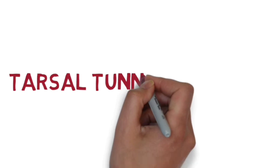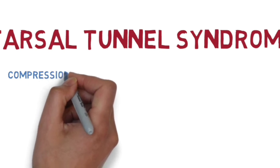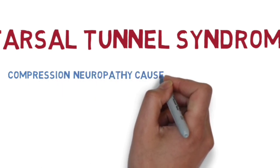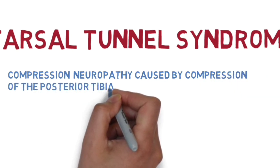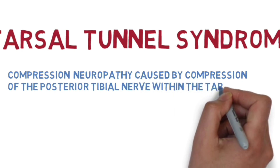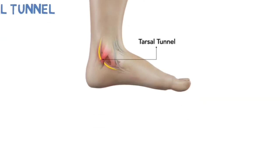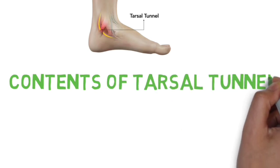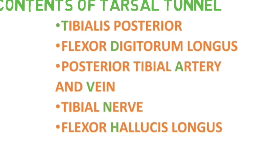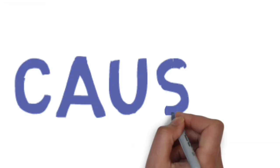Today's topic is tarsal tunnel syndrome. It is an entrapment neuropathy caused by the entrapment of the posterior tibial nerve in the tarsal tunnel. The tarsal tunnel is a fibro-osseous band located posteriorly and inferiorly to the medial malleolus. It contains the tibialis posterior, flexor digitorum longus, posterior tibial artery and vein, posterior tibial nerve, and flexor hallucis longus — remembered by the mnemonic: Tom, Dick, and Very Nervous Harry.